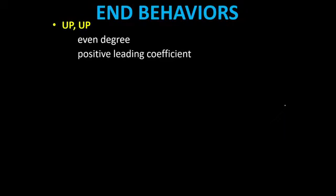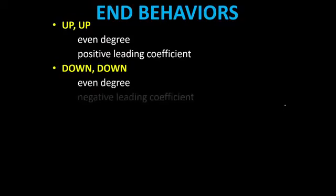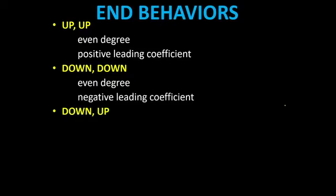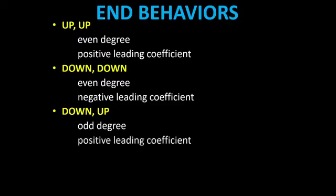Take note: you will be given an even degree and a positive leading coefficient for an up-up end behavior. Another end behavior is down-down — it's still an even degree, but this time the leading coefficient is negative. We have down-up when it's an odd degree with a positive leading coefficient.